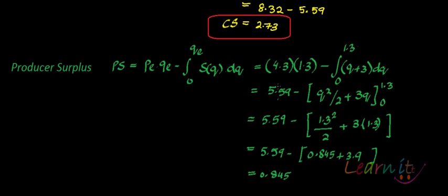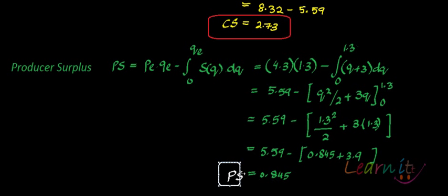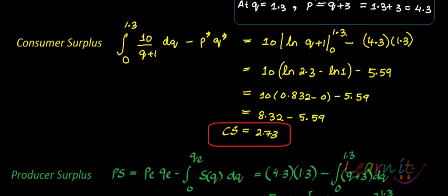So producer surplus = 0.845. This is how you calculate both consumer surplus and producer surplus — an application of definite integrals in economics.